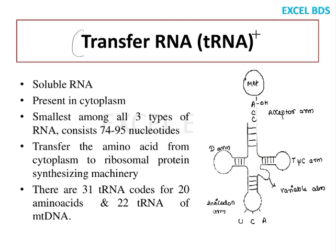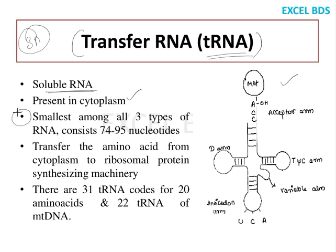Transfer RNA, or tRNA, is a type of soluble RNA present in the cytoplasm. It is one of the smallest among all three RNA types, containing 74 to 95 nucleotides. It helps in the transfer of amino acids, which is why it is called transfer RNA. There are around 31 different types of tRNA carrying the 20 standard amino acids in the cytoplasm. In mitochondria, there are 22 tRNAs.